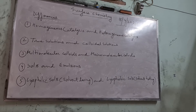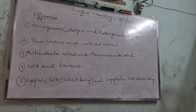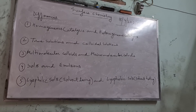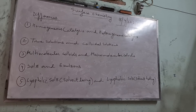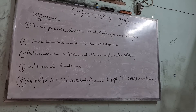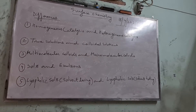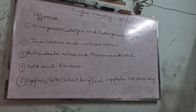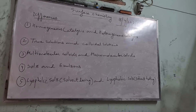Next is the difference between true solution and colloidal solution. Regarding size: in a true solution, particle size is always less than 1 nanometer, whereas in a colloidal solution the size varies from 1 nanometer to 100 nanometer. True solution does not show the Tyndall effect; colloidal solution does. True solution does not show Brownian movement; colloidal solution does. True solution does not show electrophoresis; colloidal solution does. True solution cannot be coagulated; colloidal solution can be coagulated.